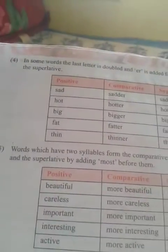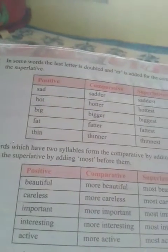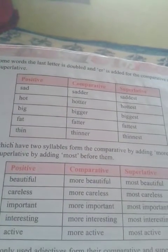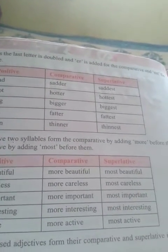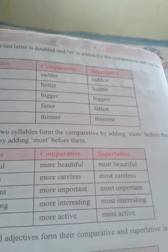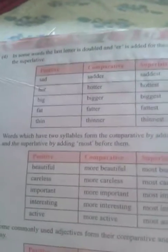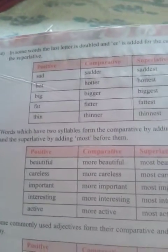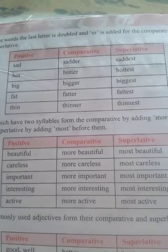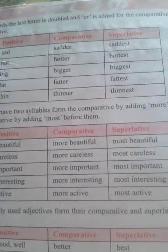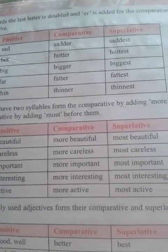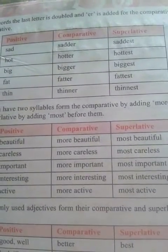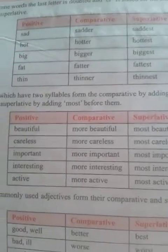In some words, the last letter is doubled, and -er is added for the comparative and -est for the superlative. Examples: sad, sadder, saddest; hot, hotter, hottest; big, bigger, biggest; fat, fatter, fattest; thin, thinner, thinnest.